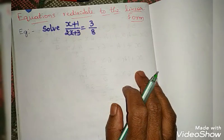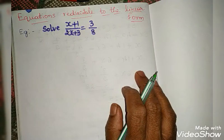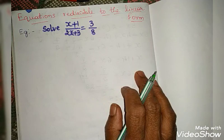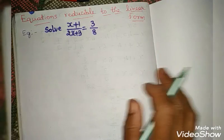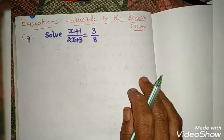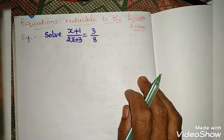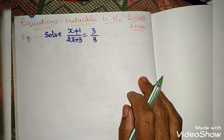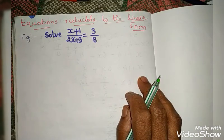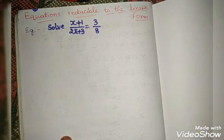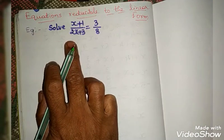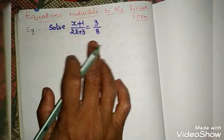Good morning students, welcome to mathematics session. In the last classes we discussed the methods of solving different types of equations. In today's class we are going to study equations reducible to the linear form — equations which are not in linear form that we can reduce into linear form. We have taken one example: solve x plus 1 divided by 2x plus 3 is equal to 3 by 8.